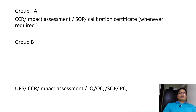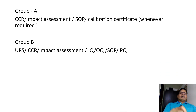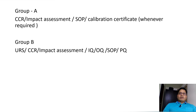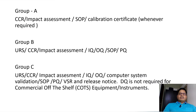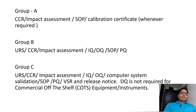For Group B instruments, the required documents are: user requirement specification, change control, impact assessment, installation qualification, operational qualification, SOP, and performance qualification. For Group C instruments, the requirements are: URS, change control, impact assessment, installation qualification, operational qualification, computer system validation, SOP, performance qualification, and a validation summary report with a release note.